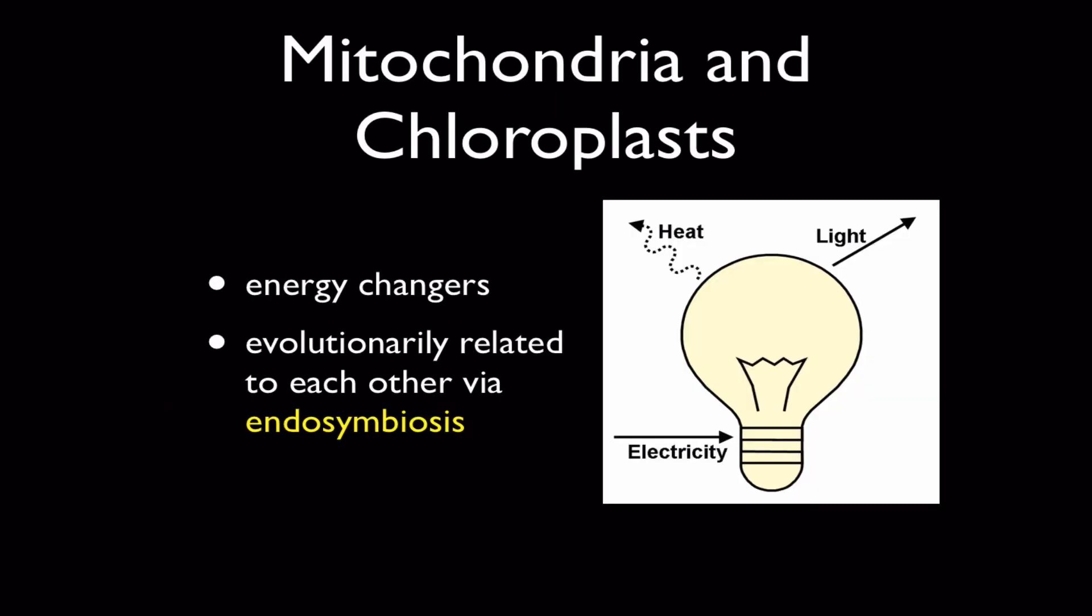The other thing that's important to know about chloroplasts and mitochondria that kind of pulls them together is the fact that they both are evolutionary related to each other and in the way that they came to be. And that focuses on a very important theory in biology called the endosymbiosis theory, which we're going to talk about in a few minutes.